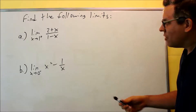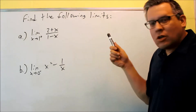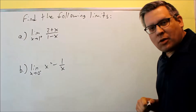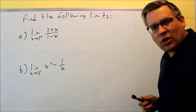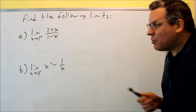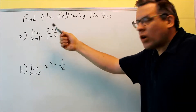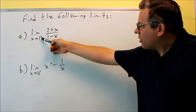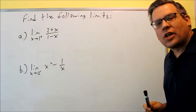For these problems, the numbers that we're approaching — if I try and plug those in directly, I'm going to be dividing by zero, and there's nothing I can do algebraically to fix that. No matter what, if I plug one in directly, I'm going to be dividing by zero. Now, these are one-sided limits. This one is approaching one from the positive side; this is approaching zero from the left-hand side.